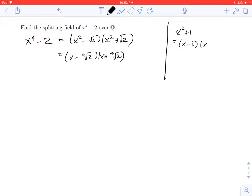So, x minus i times x plus i. Because we can view this x squared plus 1 as x squared minus minus 1. And so it's really a difference of squares where now we're viewing negative 1 as the square of i.